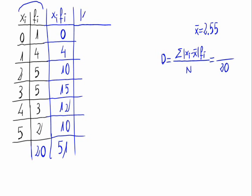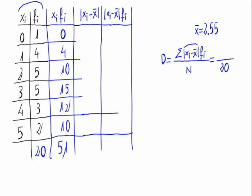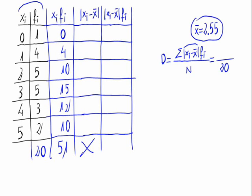One with x sub i minus the mean and the other one with x sub i minus the mean times f sub i. So, for the first value, 0 minus 2.55 in absolute value is 2.55. 1 minus 2.55 in absolute value is 1.55.